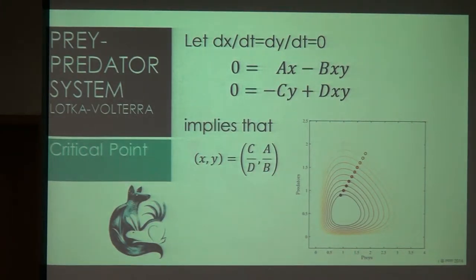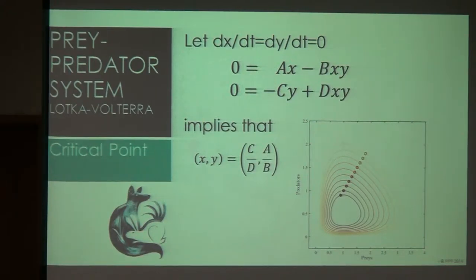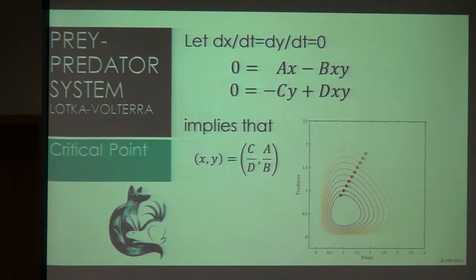How do we calculate the critical point? We can calculate it by assuming that the change of X and Y with respect to time is equal to zero — meaning they are at steady state with no change. You set those equal to zero and solve for X and Y. That gives you your critical point. In physics, they call it a fixed point; in biology, they call it an equilibrium point. Different terms, same meaning.